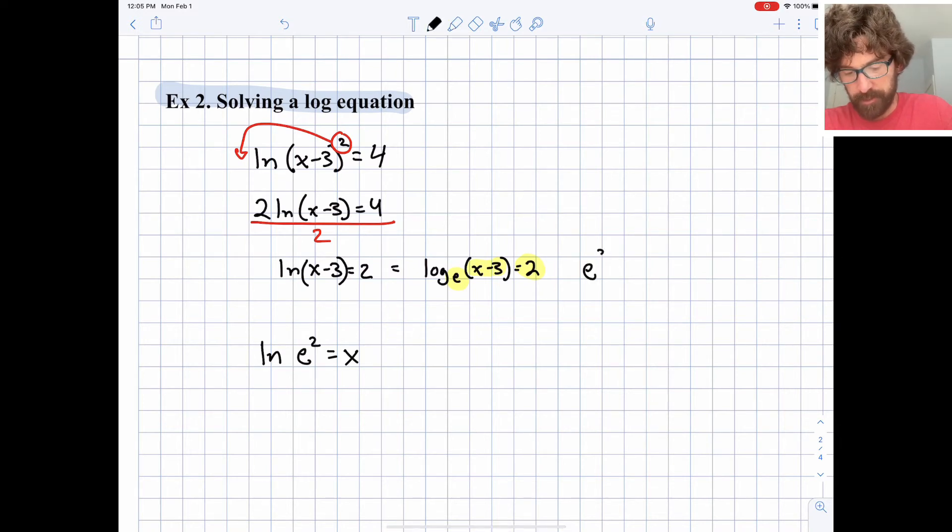e raised to the second power is going to equal x minus 3. So I'll get e squared is x minus 3. And I can add 3 to both sides to get my final answer. And I could certainly go to my calculator and get a decimal approximation. But I'm happy with that form right there.